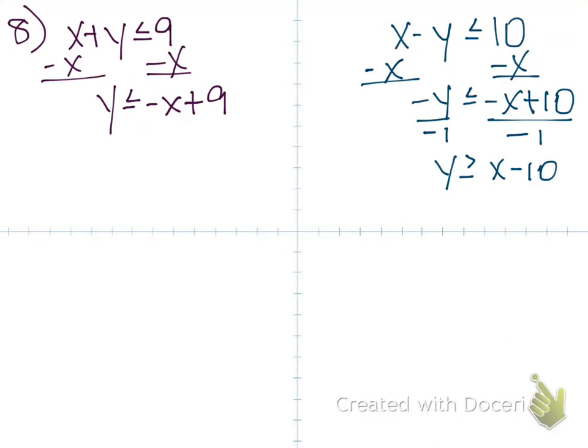So I'm going to graph the one with the 9 first. That intercept is at positive 9, which ends up being right here. And then my slope is negative 1. So I'm going to go down 1, right 1, which is going to put me about right here. Because the m is negative 1. The number in front of my x is negative 1. And it's a solid line.